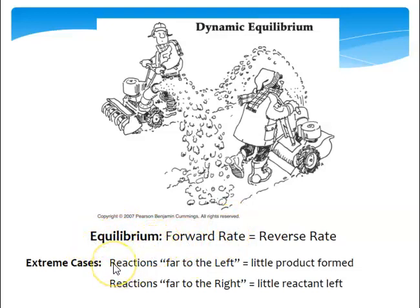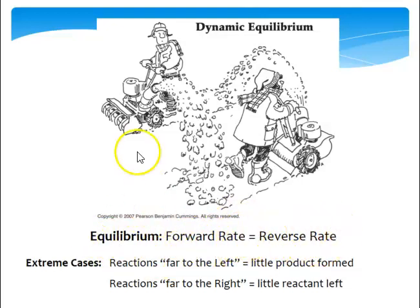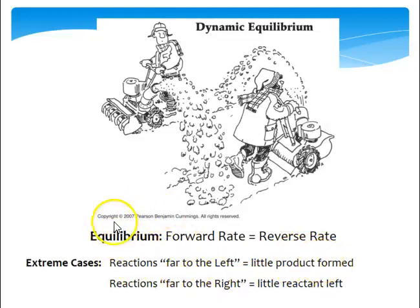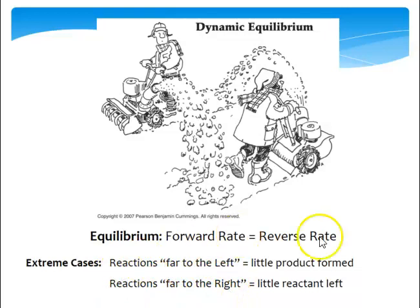Equilibrium is when the forward rate equals the reverse rate — not the concentrations, not the coefficients. When that forward reaction rate equals the reverse reaction rate, that's when we've hit equilibrium. We can have reactions that are far to the left, meaning very little product has formed — mostly reactants in my mixture, with a tiny amount of product. We call that a reactant-favored system. If they're far to the right, that's product-favored, meaning you have very little reactant left. The rates depend on the concentration.